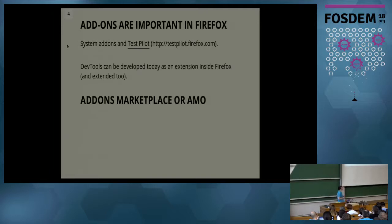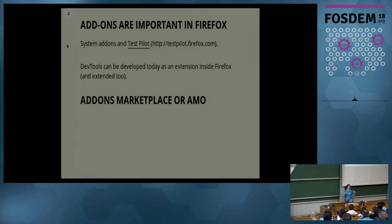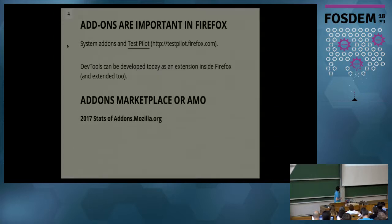One of the most important things now is that you can also develop developer tools for Firefox that use the same API as Chrome developer tools — you can extend the developer tools. This is something amazing for developers, because developers usually develop tools to develop better. Another point enforcing the importance of add-ons in Mozilla is the marketplace. In Mozilla, the codename is AMO, which in Italian is the word for love. Here is the add-on marketplace, and these are official statistics about the last year of the AMO project.